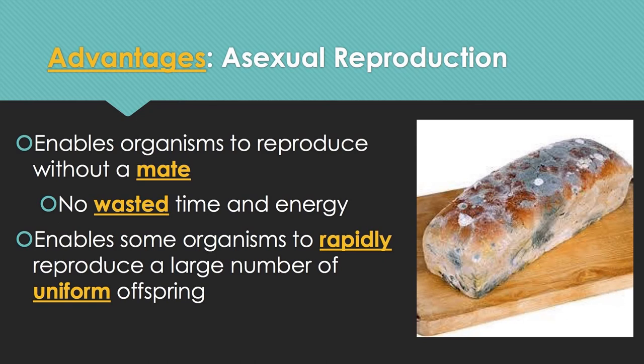Some advantages of asexual reproduction: it enables organisms to reproduce without a mate, saving time and energy. It also enables organisms to rapidly reproduce a large number of uniform offspring. If you want many offspring quickly and don't need genetic diversity, asexual reproduction allows that — this is why bacteria multiply so quickly, and why mold can multiply very rapidly.